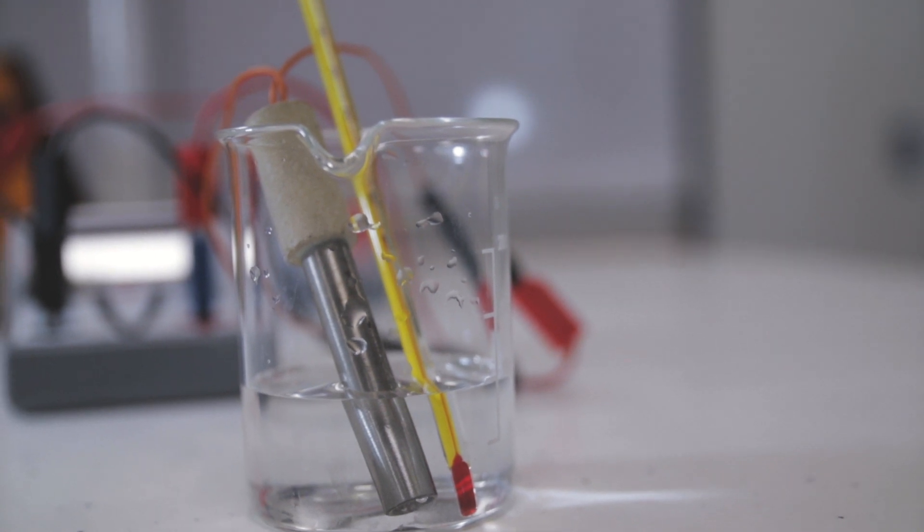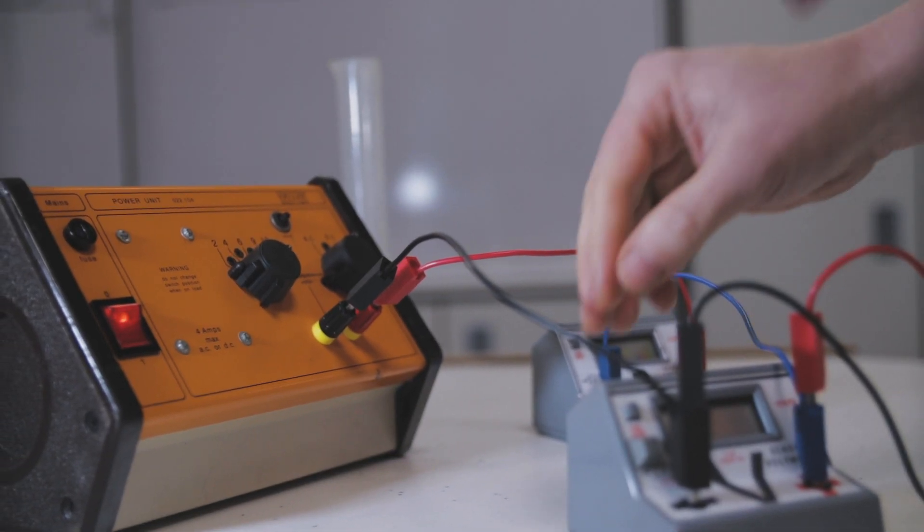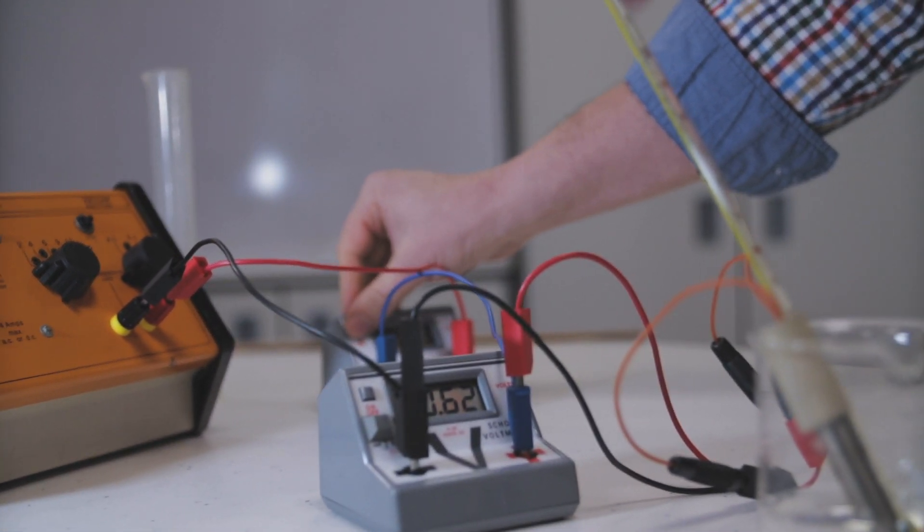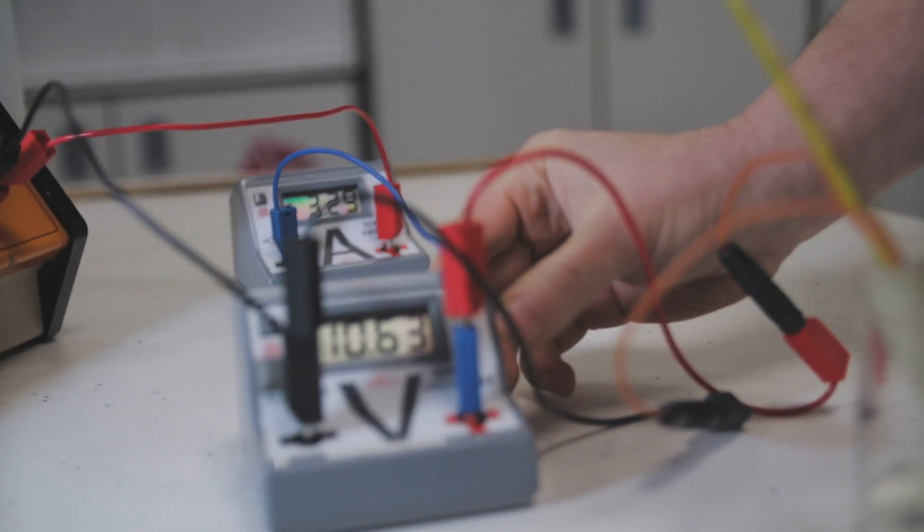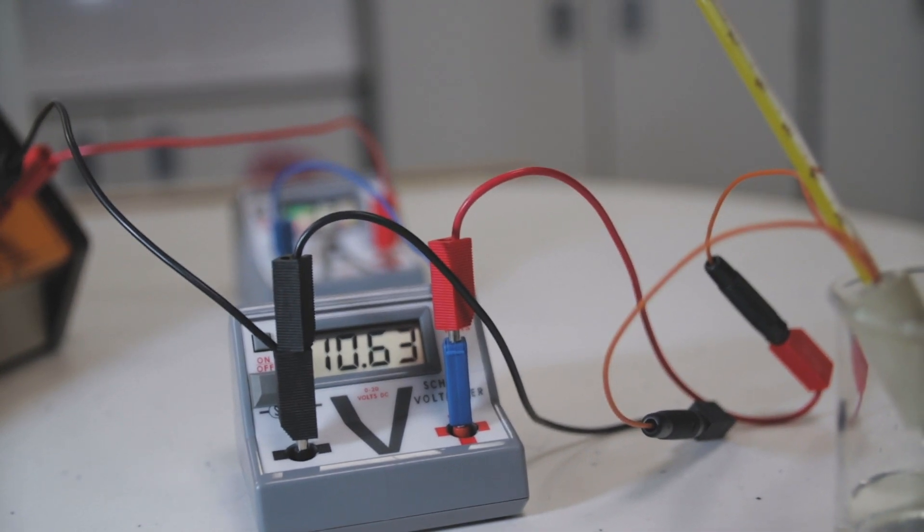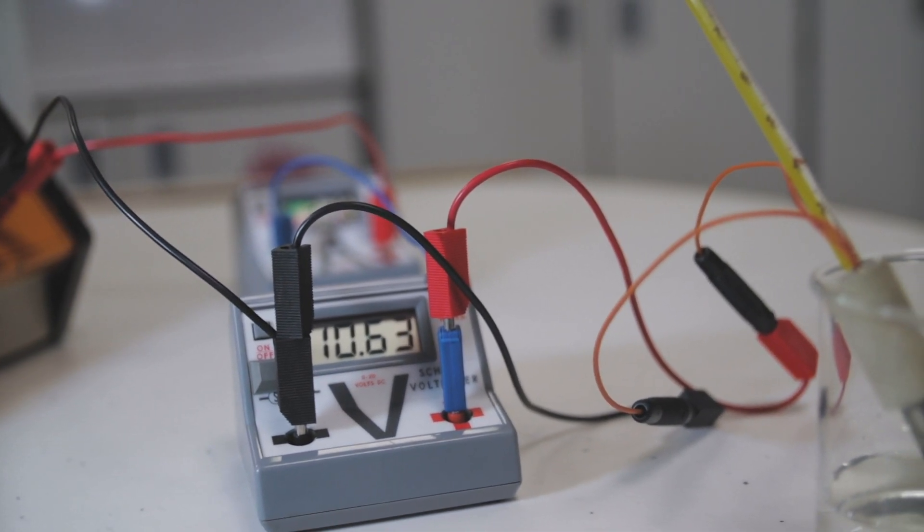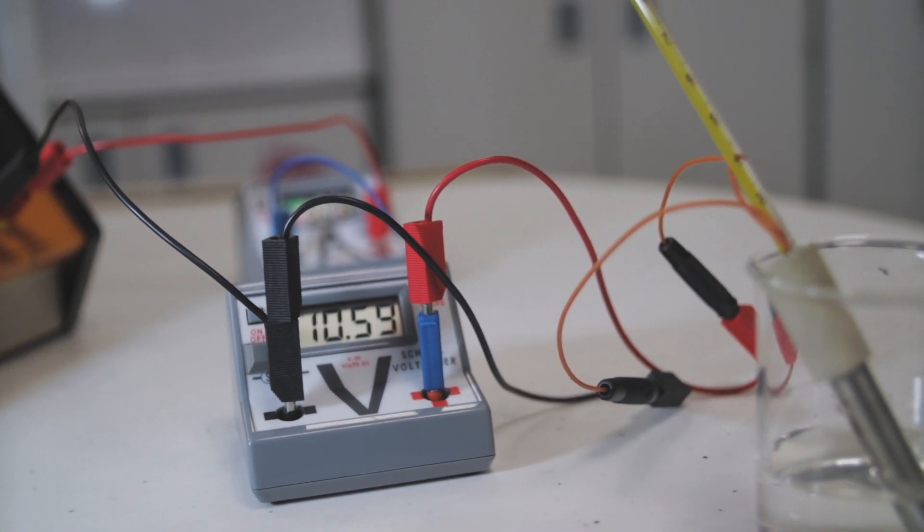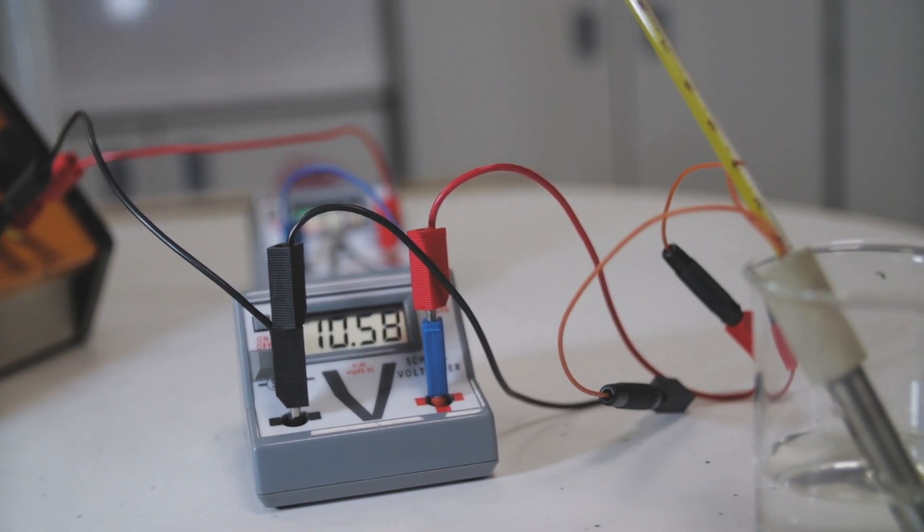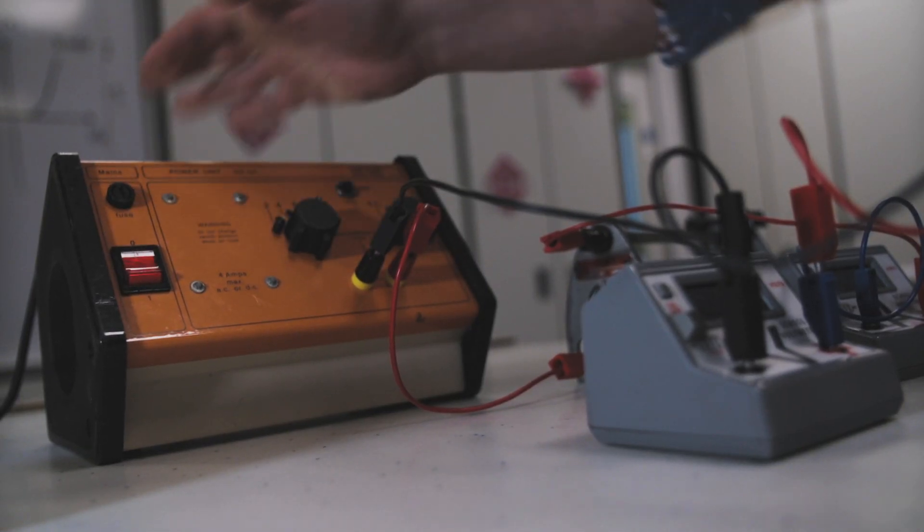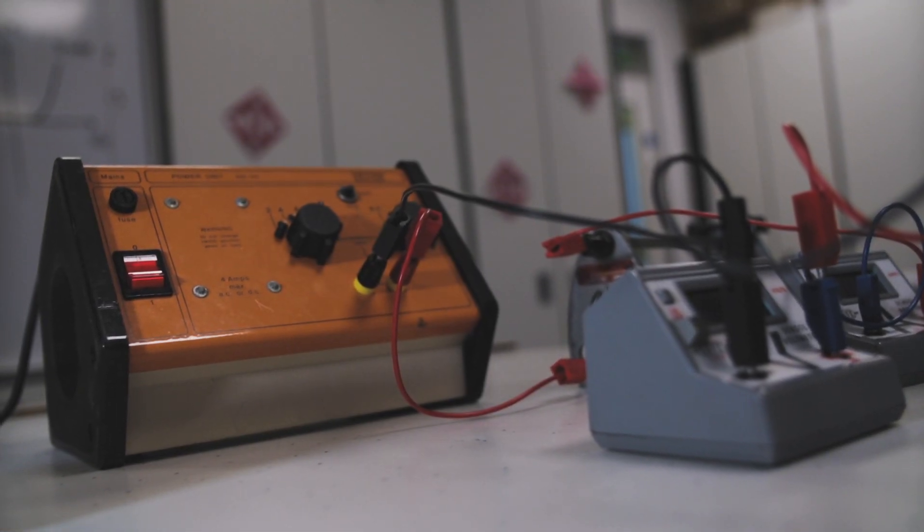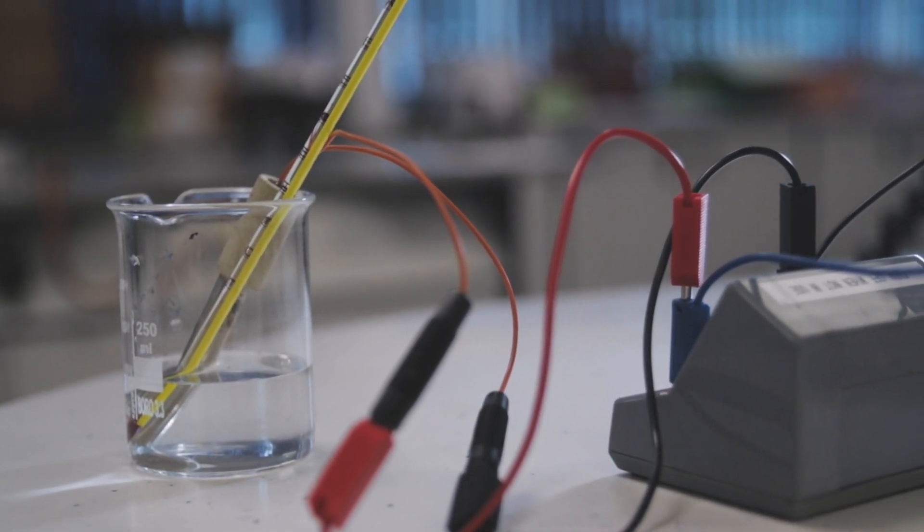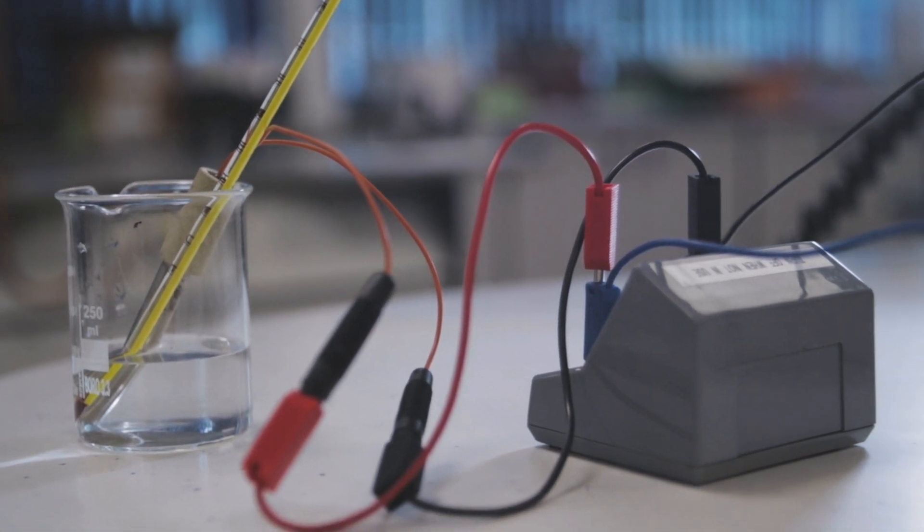Then we will switch the power pack and take the reading for the voltage. Once we have heated for a certain amount of time, we will switch the power pack off and record the maximum temperature of the water inside the beaker.